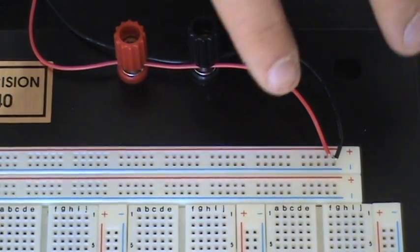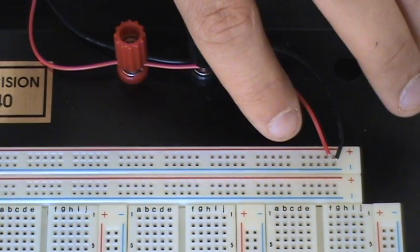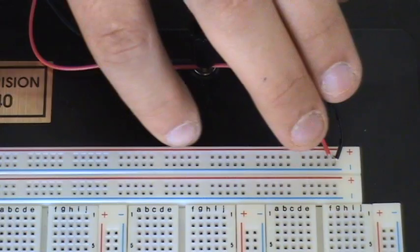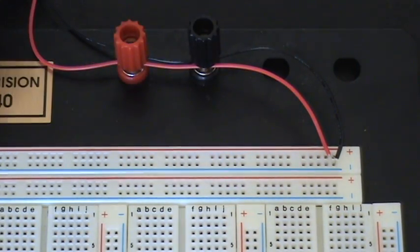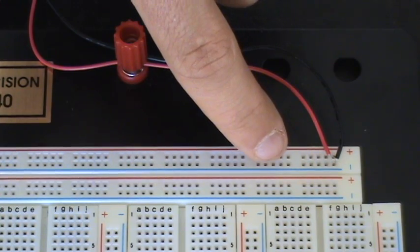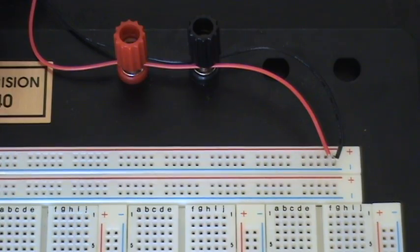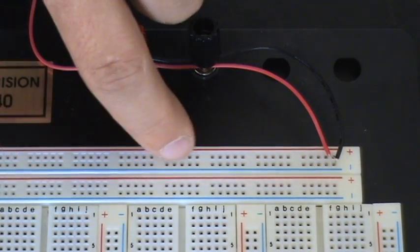And what this does is instead of having to connect every five holes, it distributes the power, the positive power through here, and the returning negative power through here. So that way we don't have to worry about connecting each different hole. We have an easy access power strip all along our breadboard right here.